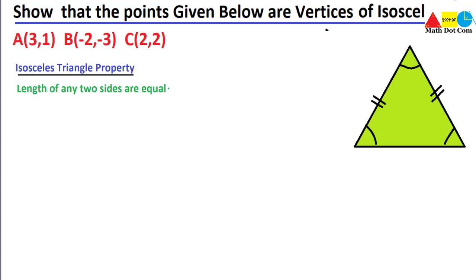This property will be helpful in showing that these points are the vertices of an isosceles triangle. To prove that any two sides are equal, we will find the lengths of the sides using the given vertices. Using these points we can find the distances AB, BC, and AC. Once we have those distances, we can check whether the length of any two sides are equal.